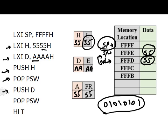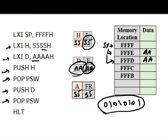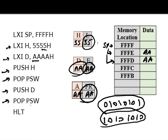Then we do PUSH D. With this instruction, the stack pointer decrements and the contents of E (AA) are stored on the stack, then decrements again and the contents of D (AA) are stored. Now AA is on the stack. With POP PSW, the data from the stack is transferred to register A and the flag register — so the flag register now becomes AA, which is 10101010. This is how we change the contents of the flag register using PUSH and POP.